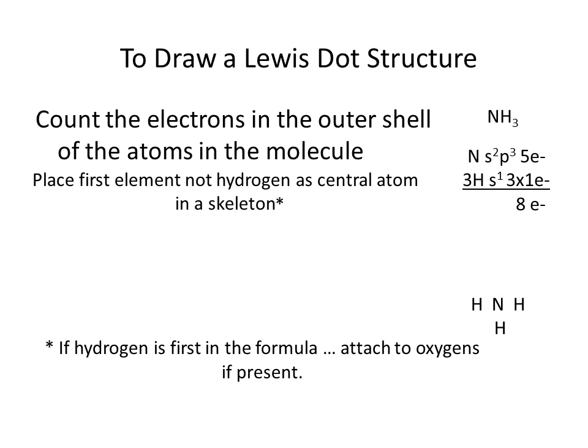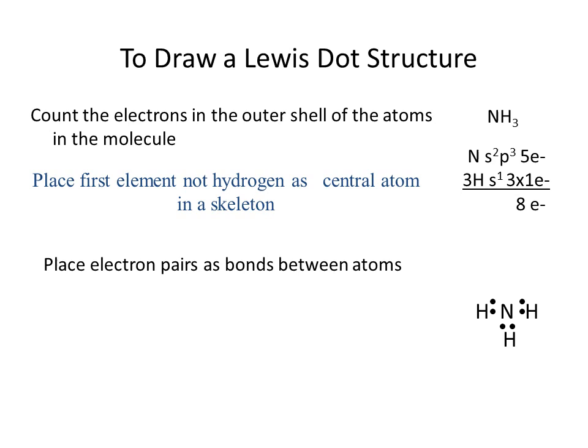The next thing that we do is we draw a skeleton. To draw the skeleton, we take the first element that is not hydrogen and place it as a central atom. The remaining atoms follow, except if you have hydrogen first in the formula, you save them out and you attach them to any oxygens that are present. That's only when hydrogen is first in the formula. Otherwise, it's the central atom is the first atom and the remaining atoms surround that central atom. Next, what we do is we take pairs of electrons and place them as bonds between the atoms. That uses up six electrons of the eight electrons total.